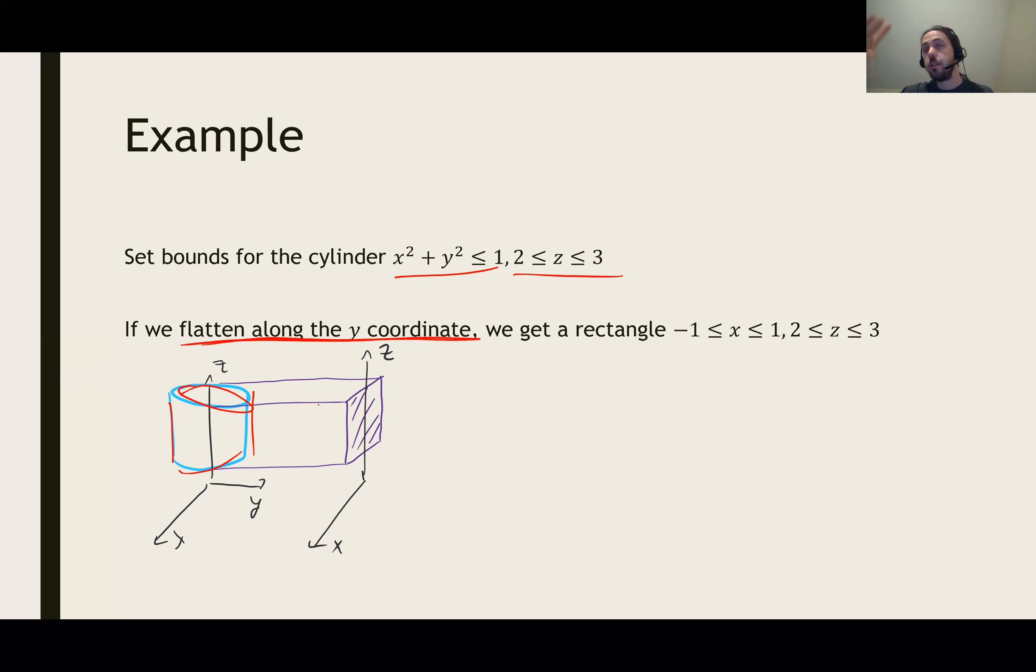When we do that, the cylinder actually looks kind of flat. It looks rectangular in shape because the z coordinates still only go between 2 and 3. And the x coordinate, because it satisfies x squared plus y squared less than 1, the x coordinates go between minus 1 and 1. So all told, this outside shape that we set up the bounds for a double integral for is a rectangle. z goes between 2 and 3, and x goes between minus 1 and 1.